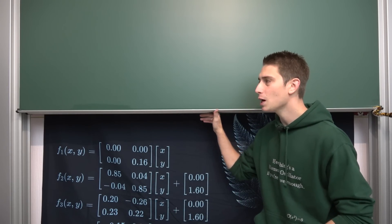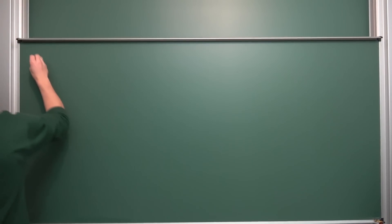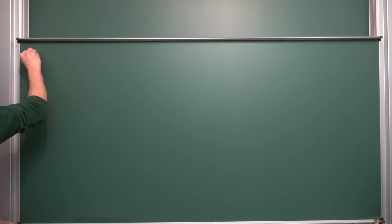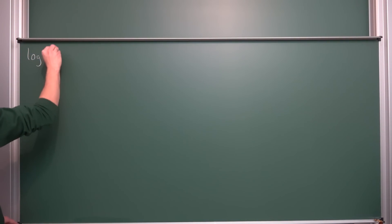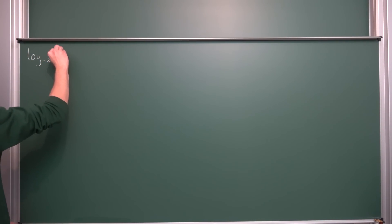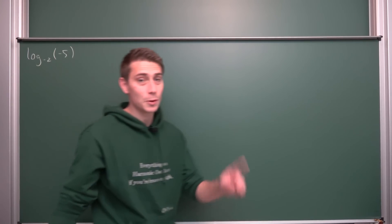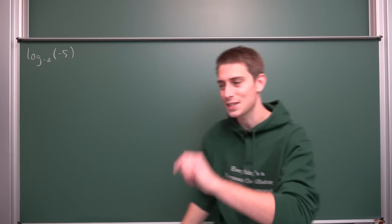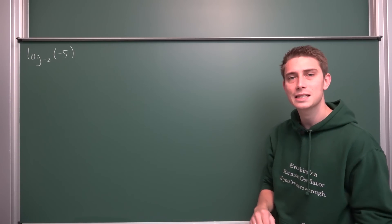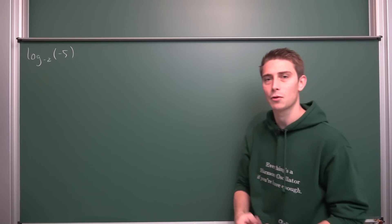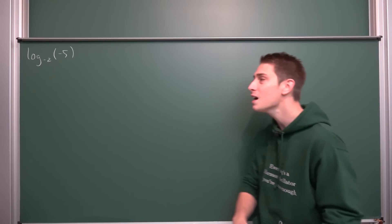For example, we are going to take a look at the general case where we can have something like the logarithm to the base negative 2 of negative 5. What's the answer to that? We are going to see this at the end of the video. Now for some prerequisites, and then we are going to dive into the complex plane.